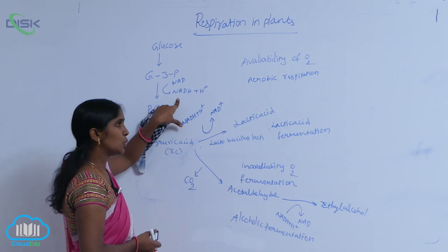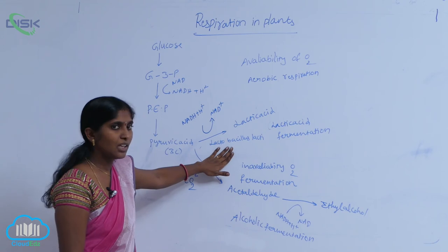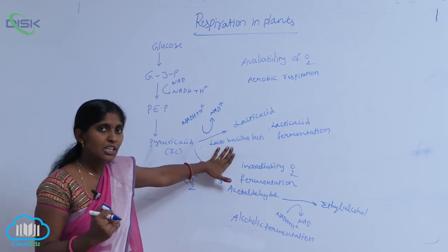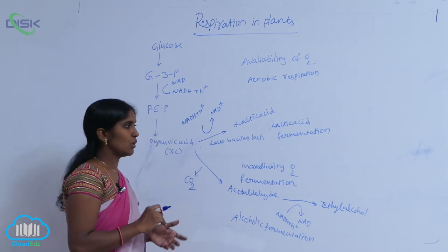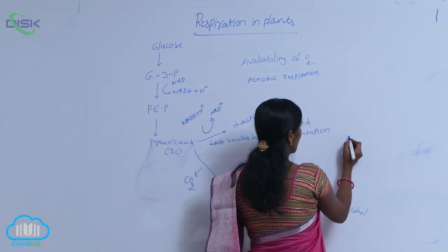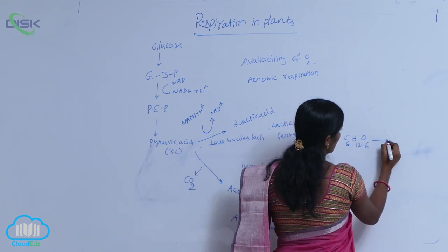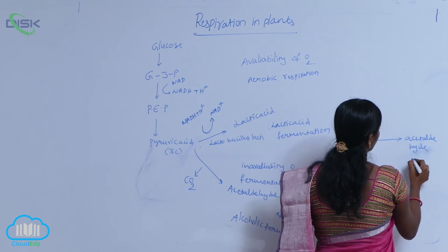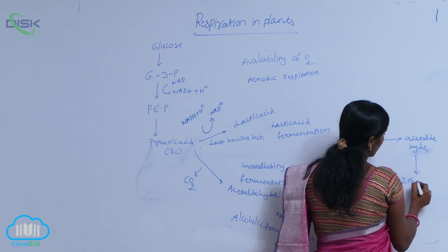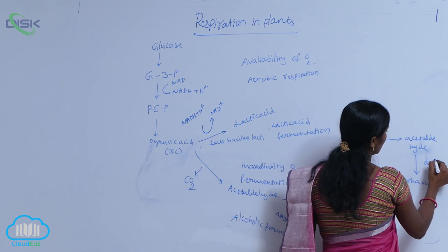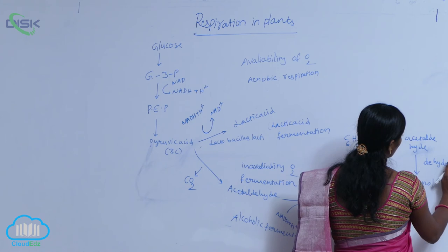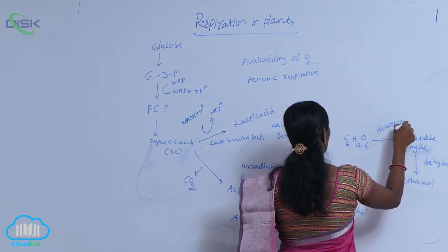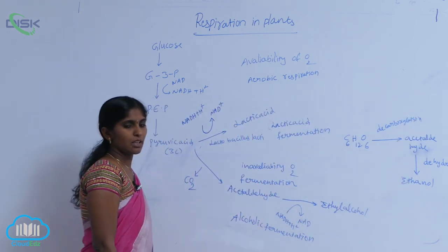The NADH2 released in glycolysis is utilized in the further fermentation reactions. That is why there is a lesser amount of energy released — partial oxidation is carried out. The overall fermentation reaction is: C6H12O6 gives rise to acetaldehyde, and acetaldehyde gives rise to ethyl alcohol, ethanol, through decarboxylation. This is about fermentation.